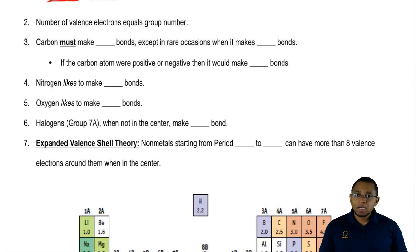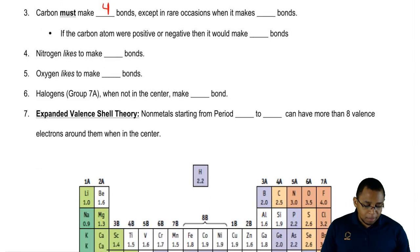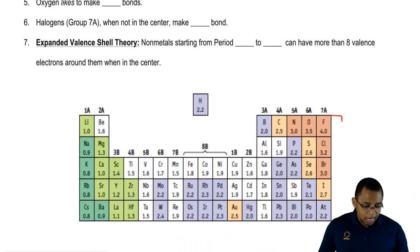Next we're going to say carbon must make four bonds. If we take a look at the periodic table, and this one's kind of incomplete but neon is right here, just realize how far is carbon away from being a noble gas. It's four spaces away: one, two, three, four.